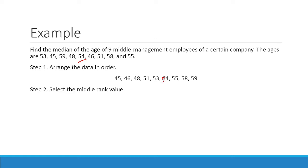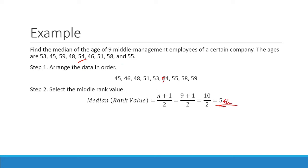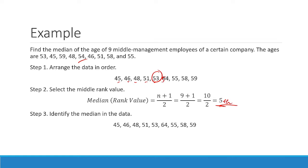Counting: 1, 2, 3, 4, 5 — that is your median. Identify the fifth value in the data array: that is 53, because it is the fifth value. Therefore, the median is 53 years old. That is how you compute for the median of ungrouped data with an odd sample size.